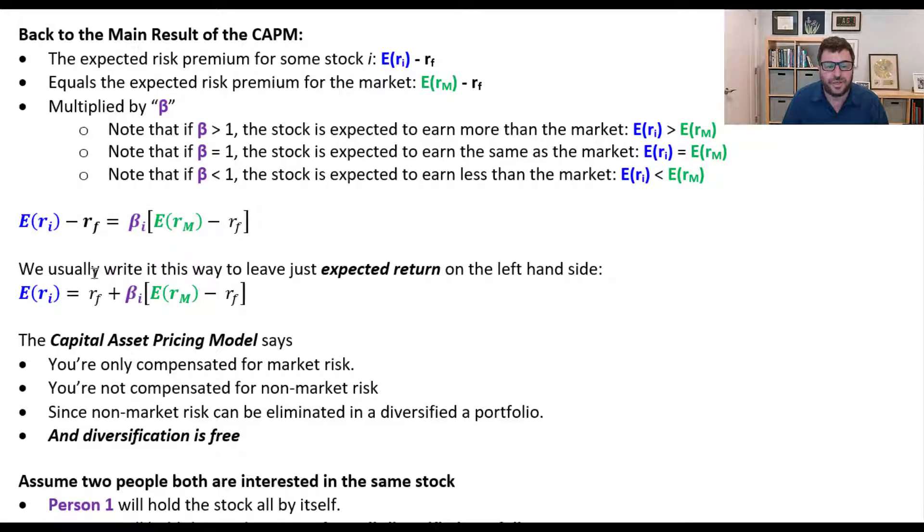You just get the market risk component. Now we usually write it this way to leave just the expected return on the left side, so that I have the expected return of the stock is equal to the risk-free plus this market risk premium times this beta. And note there's nothing else here. You don't get added to this. You don't get the idiosyncratic component.